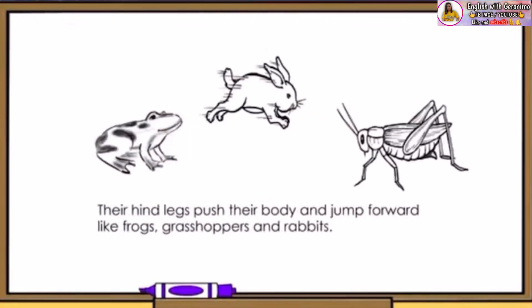How do frogs, rabbits, and grasshoppers move their bodies? They jump. And how did they do it? Their hind legs push their bodies and jump forward.